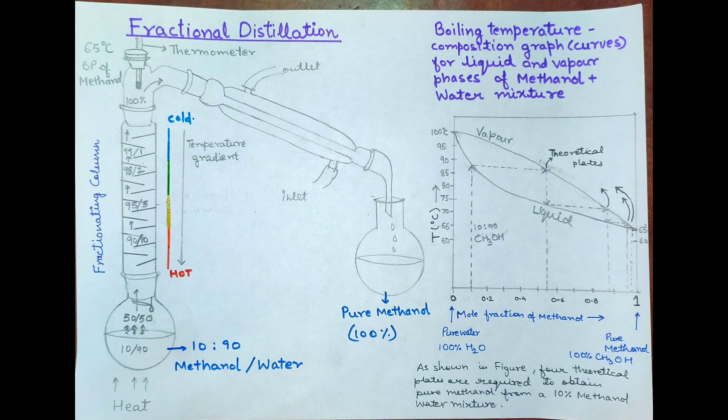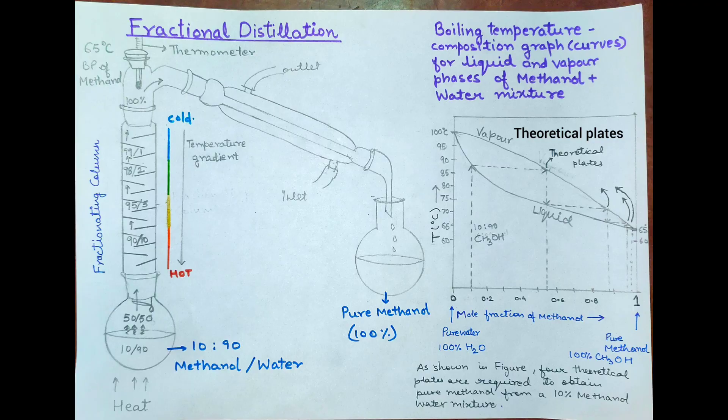Now as the vapour travels up, its composition of methanol will increase and finally if there are sufficient theoretical plates, we will achieve 100% methanol vapour at the top of the column.